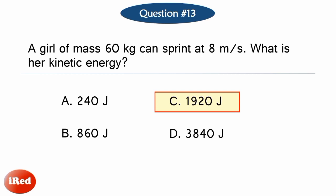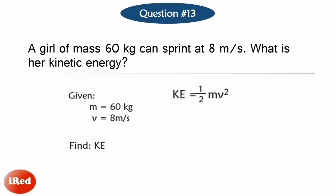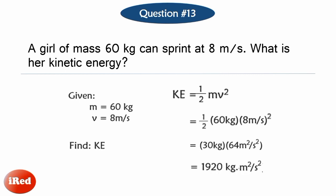The correct answer is Letter C. How did we get 1,920 joules? The given data are mass, which is 60 kilograms, and the speed, which is 8 meters per second. The equation for kinetic energy is KE = ½mv². Substituting: ½ × 60 kg × (8 m/s)² = 30 kg × 64 m²/s² = 1,920 kg·m²/s², or 1,920 joules.